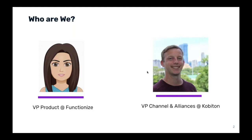Thanks, Elise, and thanks everyone for joining. I'm Kyle McMieken, VP of Channel Alliances at Cobaton. I started as a sales engineer for QA Symphony, then moved into managing cloud alliances for Tricentis for a few years before joining Cobaton in December. I'm very familiar with the testing space — from functional automation tools to performance and load testing and everything in between.